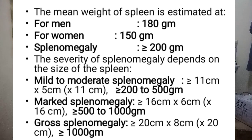In splenomegaly, the spleen will measure greater than or equal to 200 grams. Mild to moderate splenomegaly measures from greater than or equal to 11 cm × 5 cm × 11 cm, giving approximately 200 to 500 grams. Massive splenomegaly ranges from 500 to 1,000 grams, and gross splenomegaly is anything above 1,000 grams.